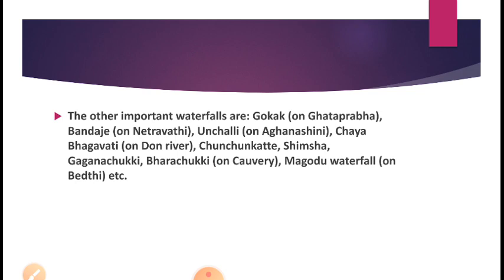Along with Sharavati, other west flowing rivers also create waterfalls. Ghataprabha river created Gokak Falls. Unchalli Falls was created by Aghanashini river. Gaganachukki and Barachukki falls were created by Kaveri river. Gaganachukki and Barachukki are called twin waterfalls because both are created by the same river in one place.